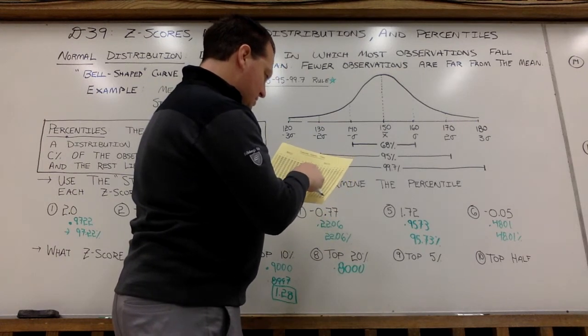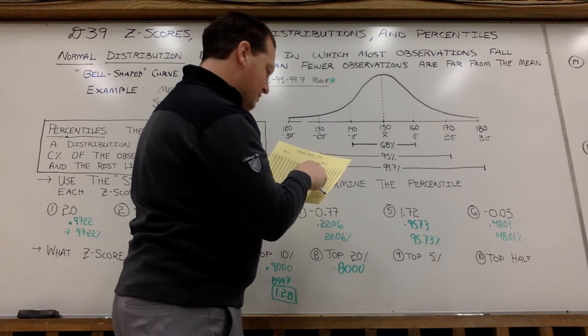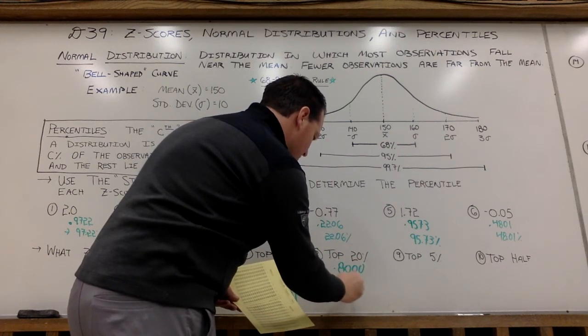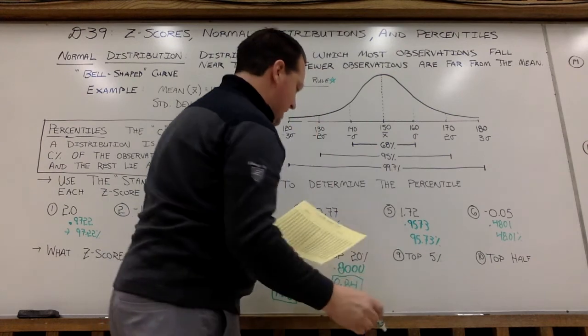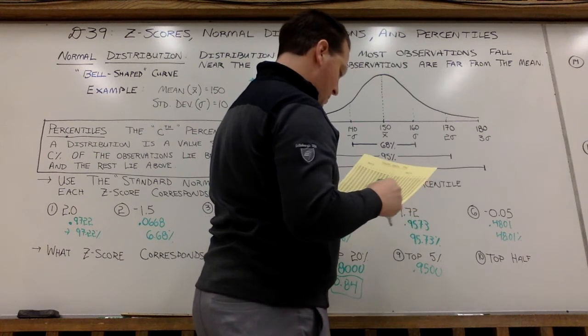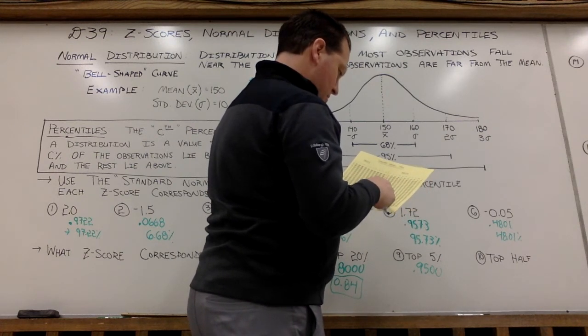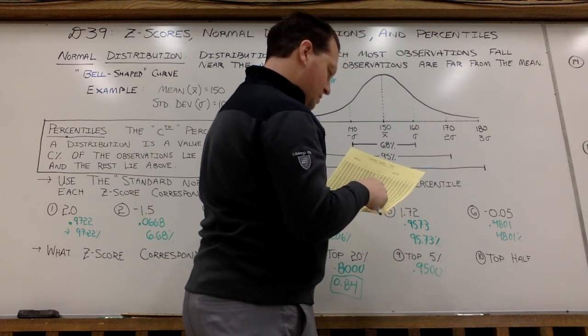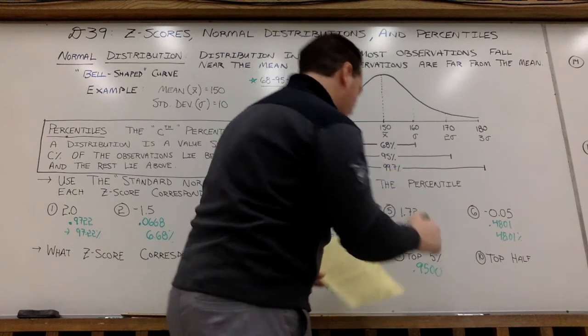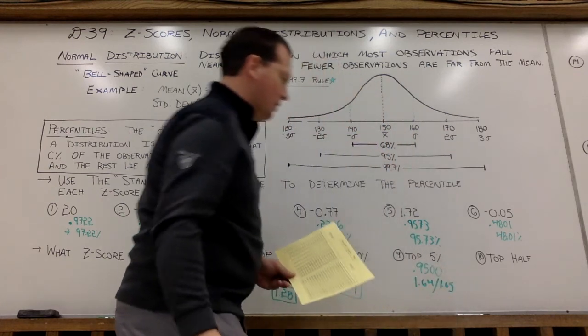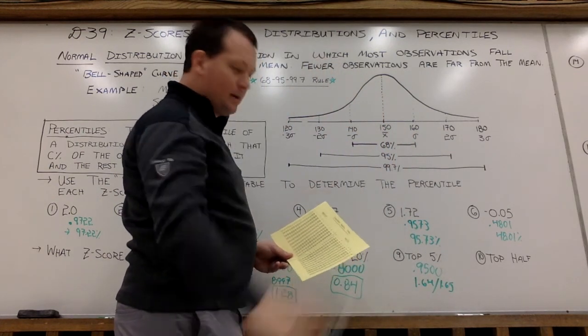Closest to 0.800 is a 0.7995, so 0.84 would be the z-score. And then top 5% at the 95th percentile, 0.9500. So this one we have a 0.9495 and a 0.9505, so 1.64 or 1.65. Either one is fine. So either one would be closest to the 95th percentile.